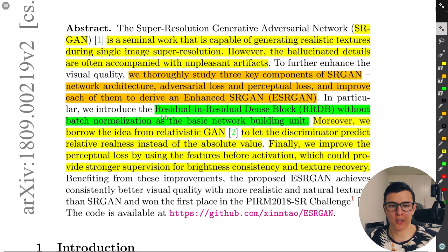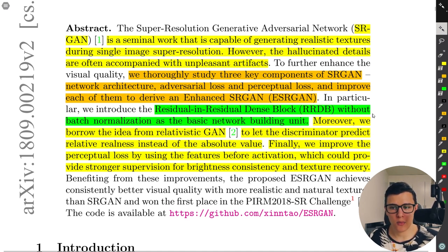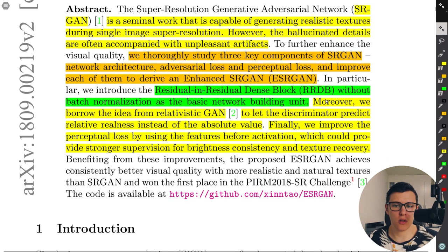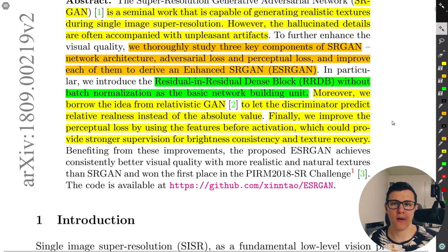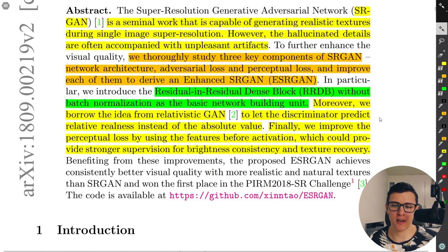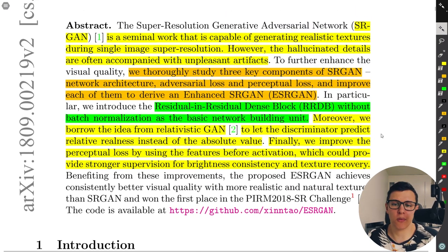For the architecture, they use a Residual in Residual Dense Block, RRDB, which doesn't use batch normalization. For the loss, they use something called a Relativistic GAN, which lets the discriminator predict relative realness instead of an absolute value. They also change the VGG perceptual loss to be computed before activation — before the ReLU instead of after.